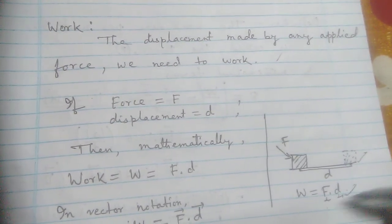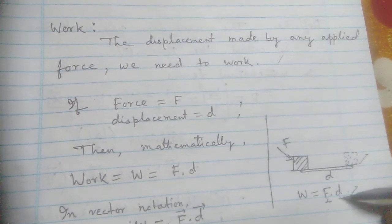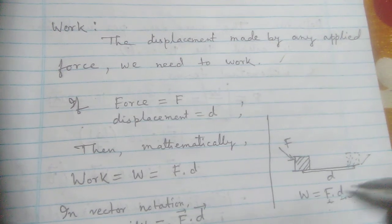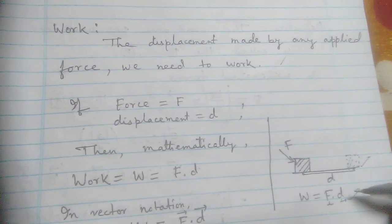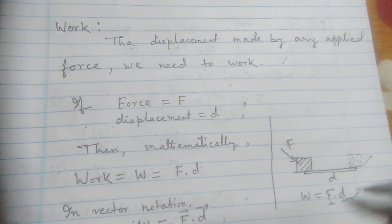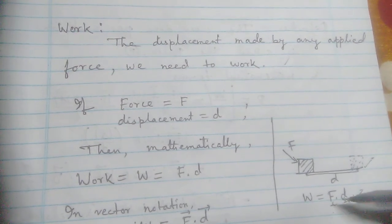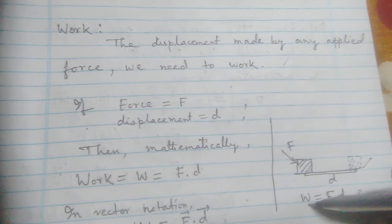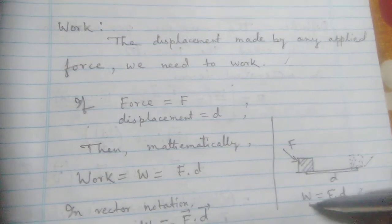one is dot and one is cross. Vector cross product always takes a direction and a scalar product of two vectors always takes the magnitude also. So work has just magnitude, not direction.